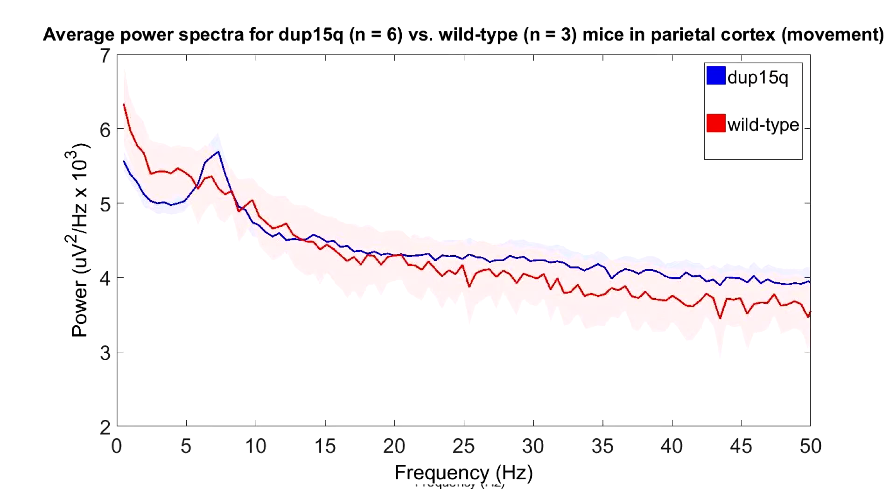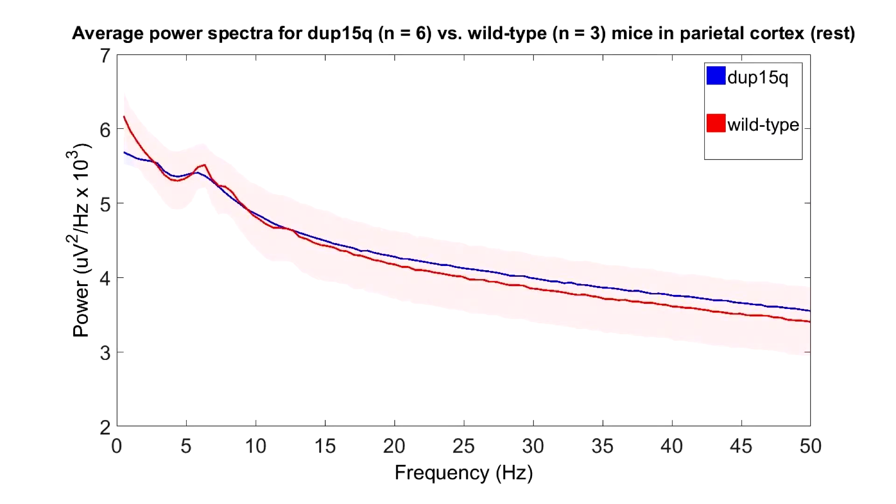There's no difference in the beta power at all. Maybe beta power is not what's different in the mouse. We'd be happy to find any difference in any frequency band, but unfortunately we're not seeing it. These animals are free to run or rest on a treadmill, and we can look at rest and running. We don't see any differences when the animals are running, and we don't see any difference when the animals are resting.